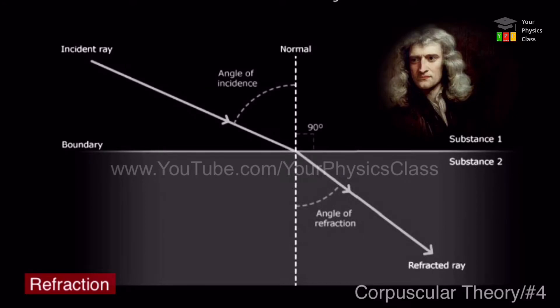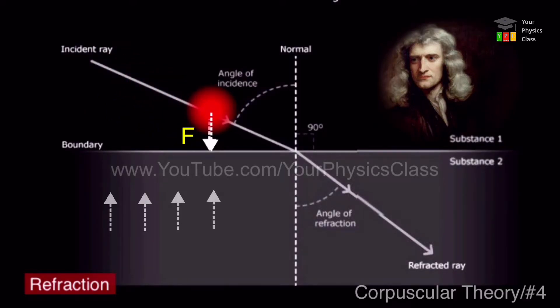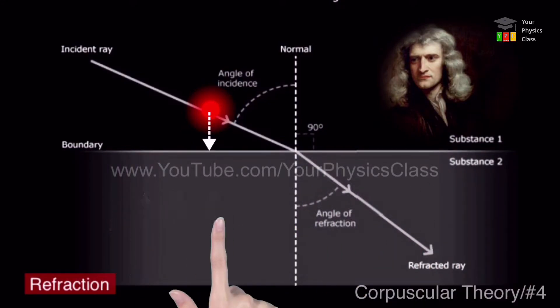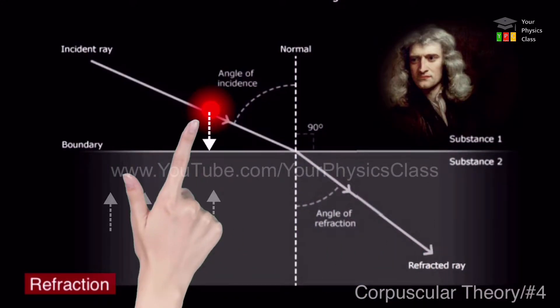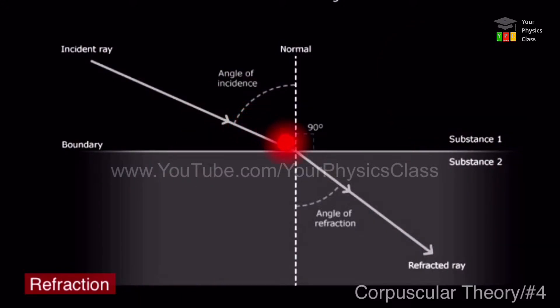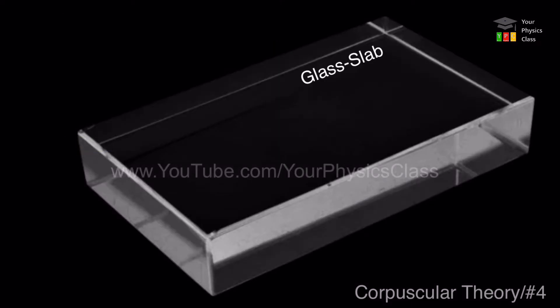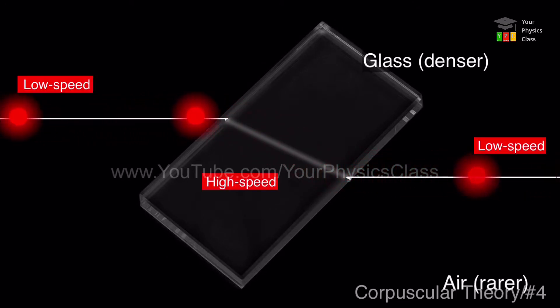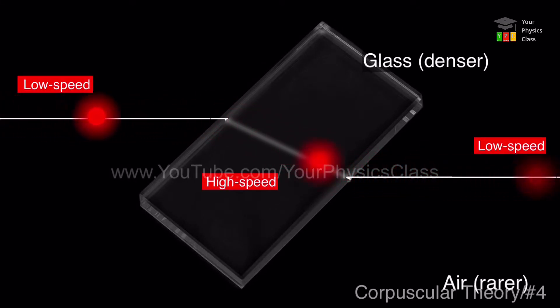Newton explained this change in direction as attractive forces between corpuscular and particle of medium. A denser medium exerted larger attractive force on light corpuscular to accelerate them along the normal to the boundary. Thus, Newton's theory predicted that the speed of light in denser medium would be higher than that in rarer medium.